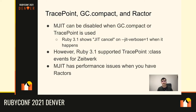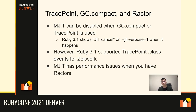Zeitwerk, the Rails 6 default autoloader, uses TracePoint. So if you use Zeitwerk, you cannot use MJIT with it in Ruby 3.0. To fix that, in Ruby 3.1 we introduced support for TracePoint class events — the only event type used by Zeitwerk. So if you use Ruby 3.1 you could see performance improvement by running the JIT compiler with Zeitwerk enabled. But in Ruby 3.0, the JIT code will simply be disabled once Zeitwerk is called.